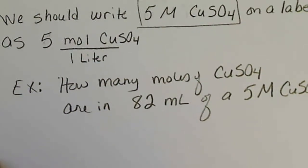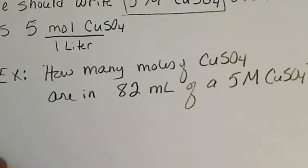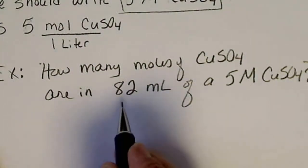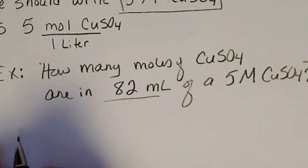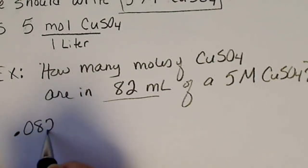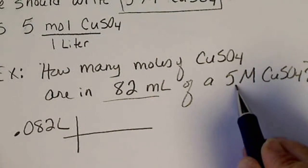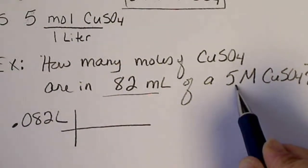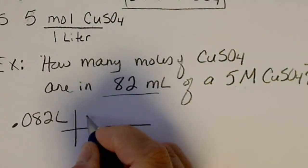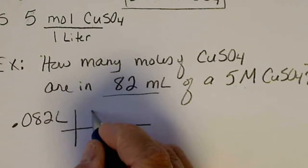That's the most common way we use the capital M. So I have to turn milliliters into liters. So I have 0.082 liters. And then this five is the concentration unit. M is a unit conversion, basically.